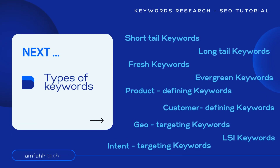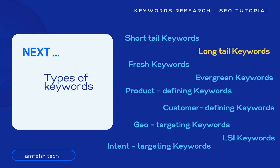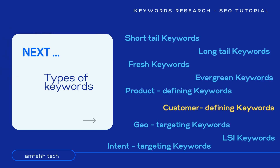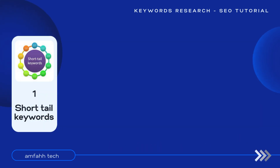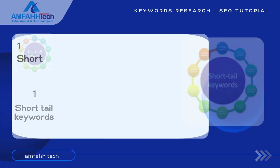Next, let's see the different types of keywords, which are: shorter keywords, long tail keywords, fresh keywords, evergreen keywords, product defining keywords, customer defining keywords, geo targeting keywords, LSI keywords, and intent targeting keywords. Now let's discuss all these keywords one by one. Number one is shorter keywords.